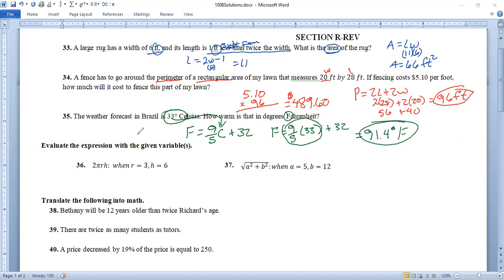Number 36, two pi RH when R, so this three goes in for R and the H goes in for S or six goes in for H. So we have two times pi times three times six, punch that in the calculator, two times pi times three times six. And that is 113.1. If we round there, it's 0.1 and it doesn't give us any units, meters or feet or surface area or anything like that. So just evaluate that expression, 113.1.